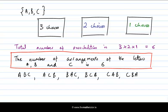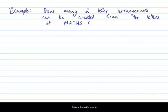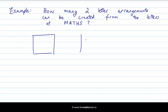Let's try another example. This is a slightly different type of question about arrangements. Here we're asking for the number of two-letter arrangements from the letters of the word MATHS. We have five letters in total, and they're all different. But we're only asking for two-letter arrangements — we're not going to arrange all five letters. We just choose two letters and arrange those, and we're looking for the total possible number of such arrangements. Think of our arrangement as two boxes representing the two letter positions.